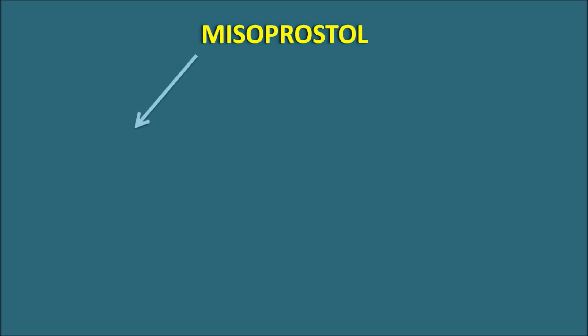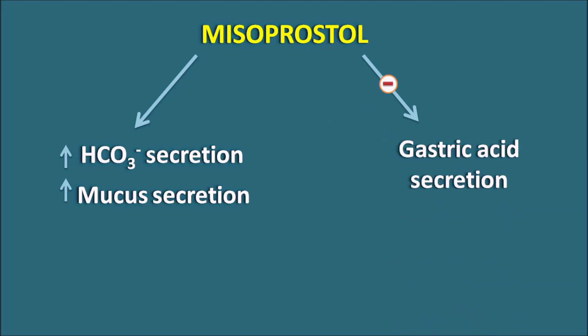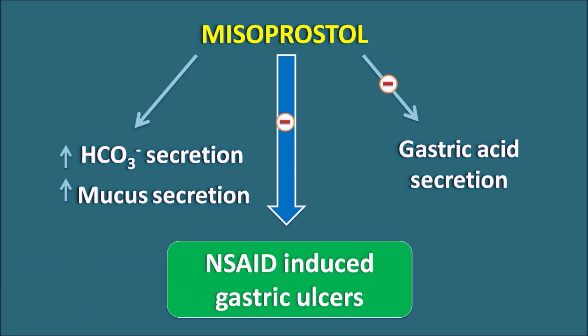Since these ulcers are produced due to inhibition of prostaglandin synthesis, we can give drugs externally — prostaglandin E analogs — to decrease the gastric ulcers produced by NSAIDs. Misoprostol is one such drug: it is a prostaglandin E analog with dual action, increasing bicarbonate and mucus secretion while controlling gastric acid secretion. Thereby misoprostol can be used to treat NSAID-induced gastric ulcers.